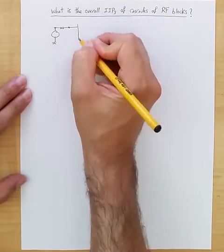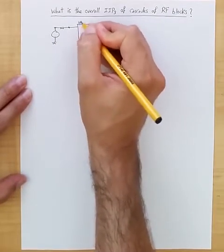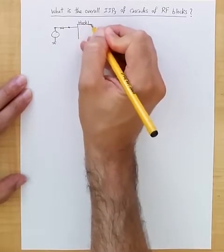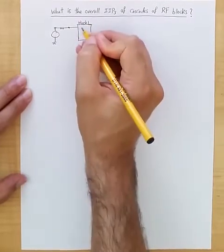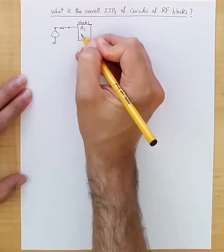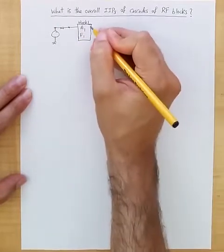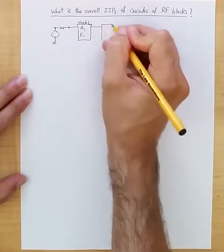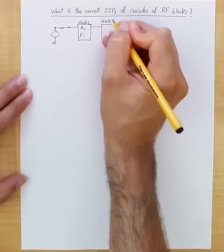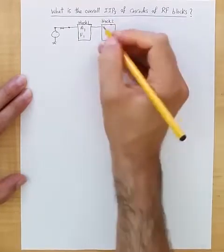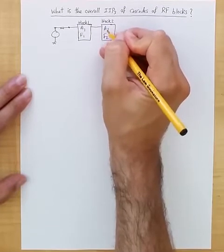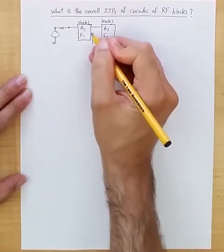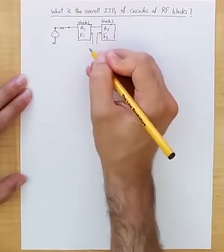And then we have the first block, so block one, with voltage gain A1 and noise factor F1. And then we have block 2 with noise factor F2 and voltage gain A2, and assume that these are perfectly impedance matched.